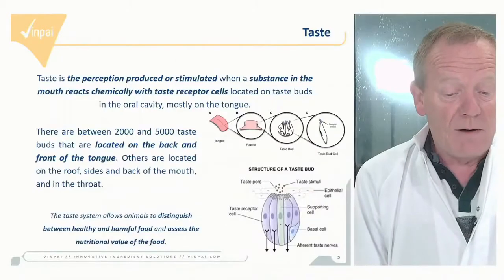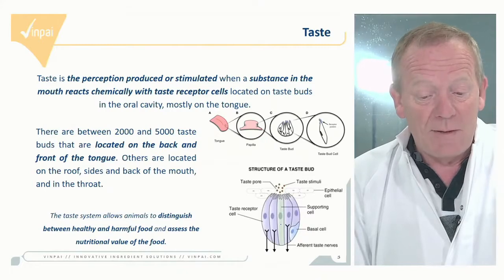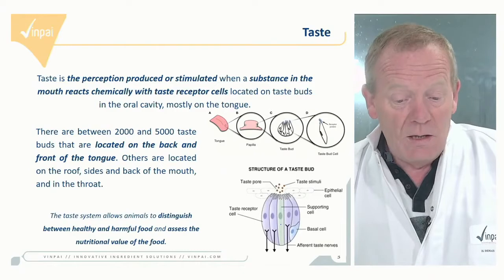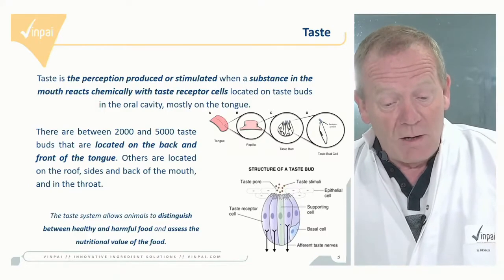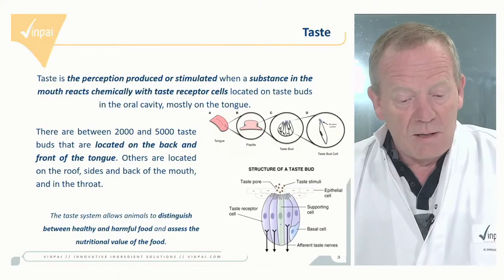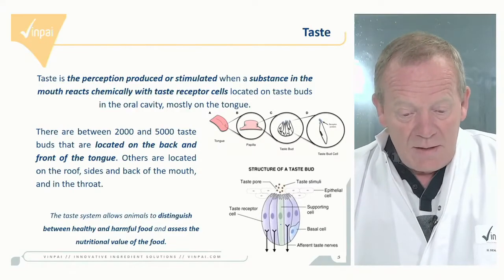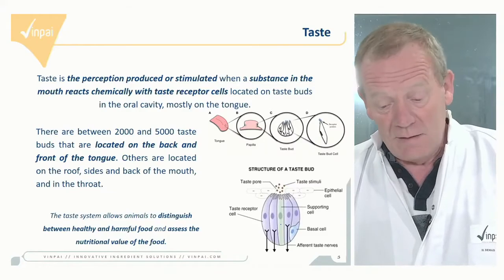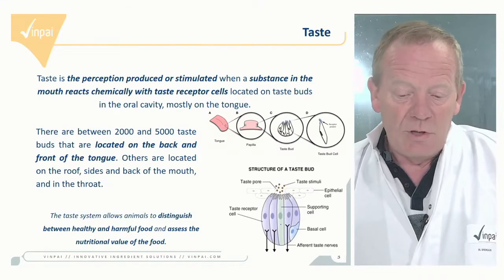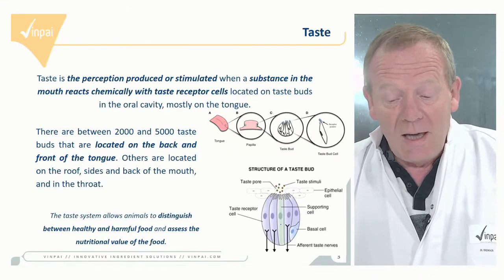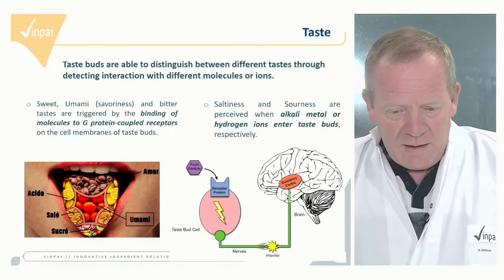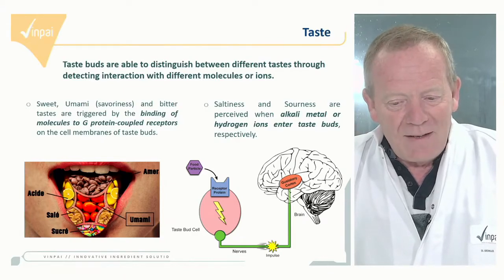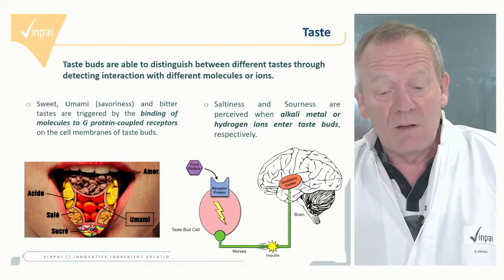Taste is the perception produced when a substance in the mouth reacts chemically with taste receptor cells, which are located on taste buds in the oral cavity and mostly on the tongue. We have between 2,000 to 5,000 taste buds located on the back and front of the tongue, and some others on the roof, sides, and back of the mouth and in the throat. Taste buds are specific bunches of cells connected to the nerve system, able to detect and transfer a message when they contact chemical substances. Taste buds distinguish between different tastes by detecting specific interactions with different molecules or ions.